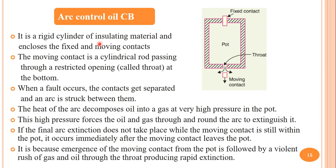In an arc control oil circuit breaker, a rigid cylinder of insulating material is used and fixed and moving contacts are placed in the pot. The moving contact is a cylindrical rod passing through a restricted opening at the bottom of the cylinder. When a fault occurs, contacts get separated and an arc is struck between them. The heat of the arc decomposes oil into hydrogen gas; since it is a closed pot completely filled with oil, high pressure is produced inside the pot. This high pressure forces oil and gas through and around the arc, with high turbulent motion of gas and oil helping to extinguish the arc.